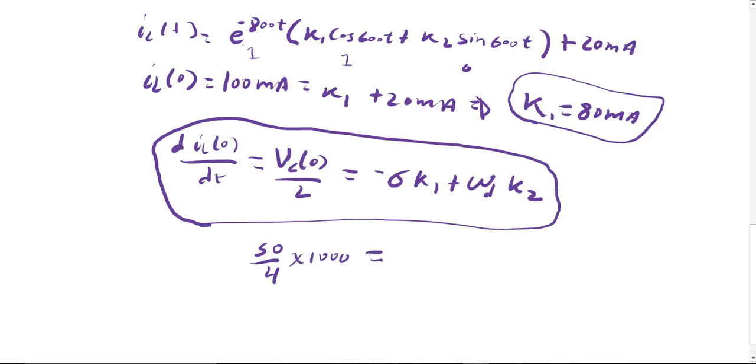Because this gives you in amperes but our values on this side are all in mA because k1 is in mA, so you can convert this into mA equals to negative alpha is 800, k1 is 80, omega d is 600, k2. And after this, this becomes 12.5, and you multiply and then you plug and chug, you find k2 to be 127.5 mA.